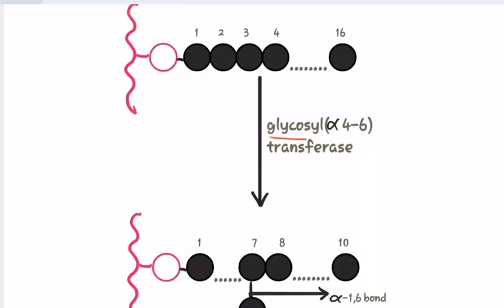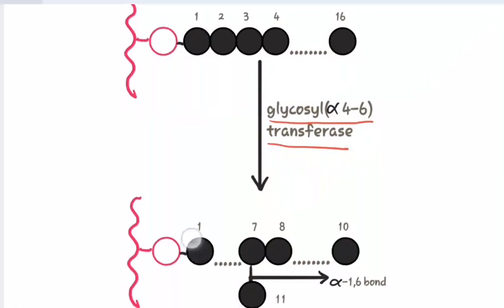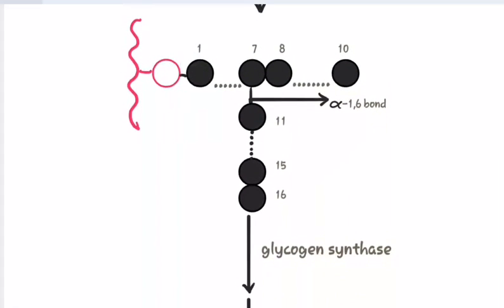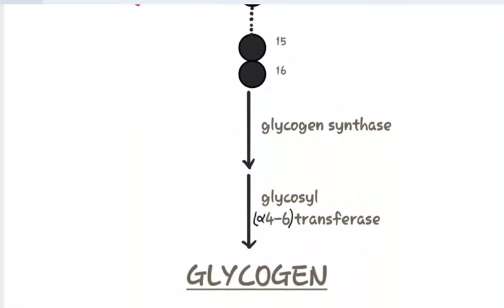Branch formation takes place, which is catalyzed by the enzyme glycosyl alpha-4,6-transferase, which transfers 5 to 8 molecules of glucose from the non-reducing end of glycogen and attaches them to another glucose molecule, forming an alpha-1,6 bond. A simultaneous action of glycogen synthase and glycosyl alpha-4,6-transferase is observed, and finally glycogen is synthesized.